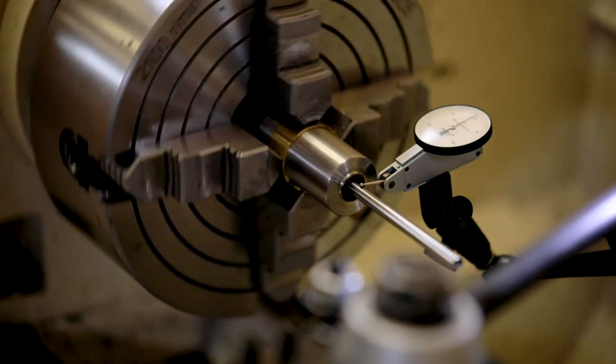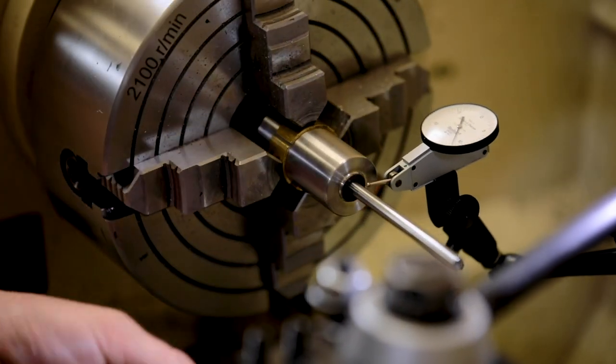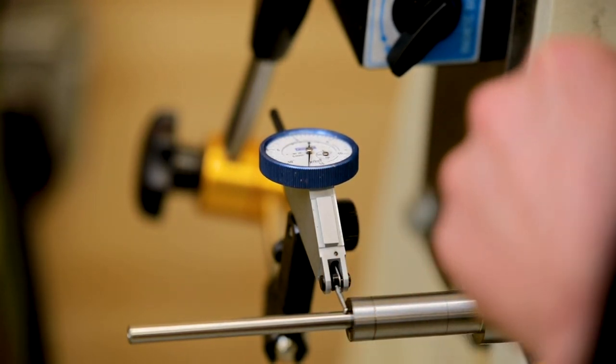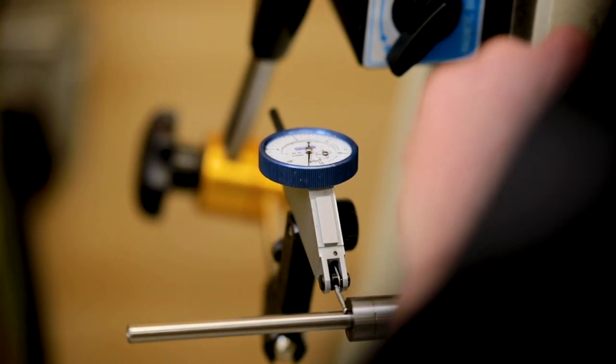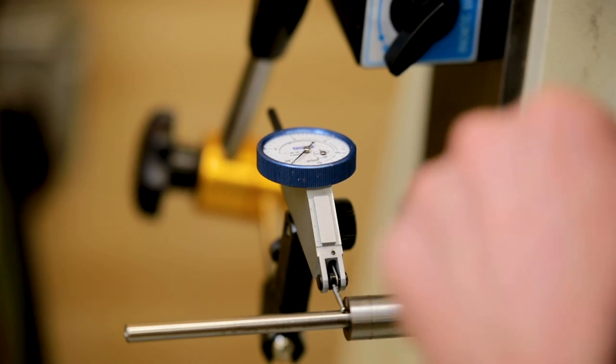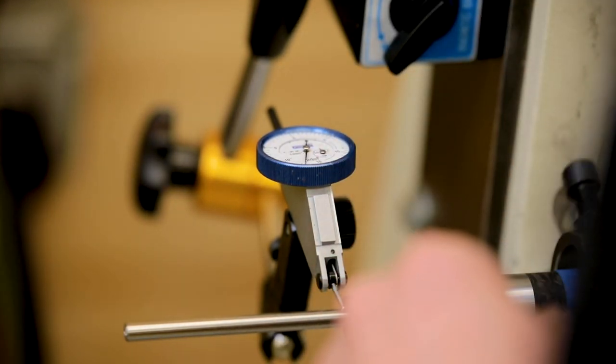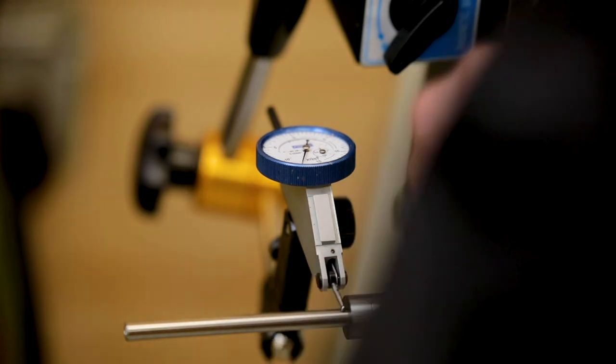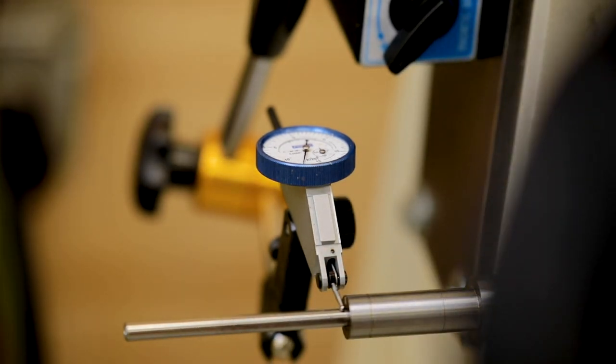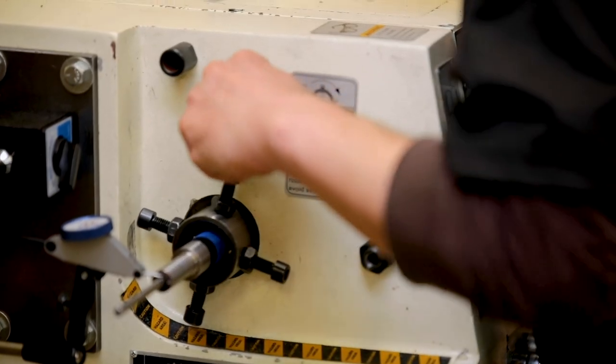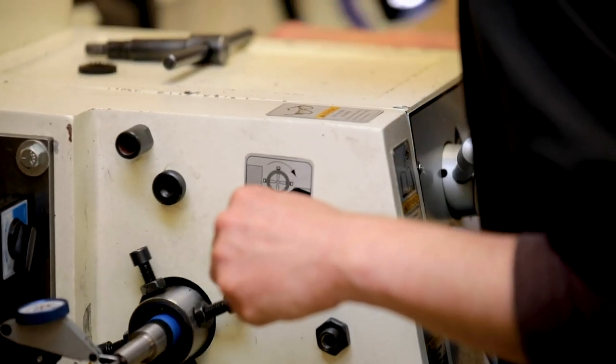Okay, now let's see what the back looks like. And these are both half thousands indicators, so each little delineation line there is one half of a thousandth. So we are within a thousandth on this one, but as always, I'm going to get much much closer. Basically zero runout again.